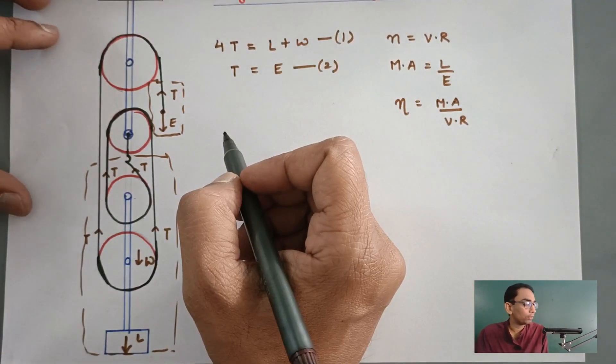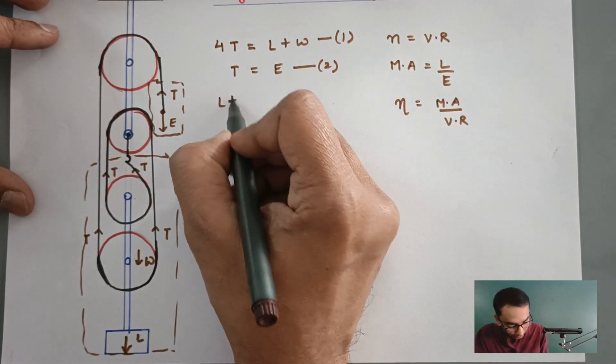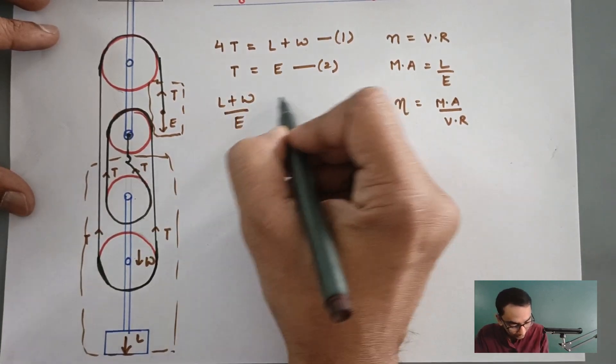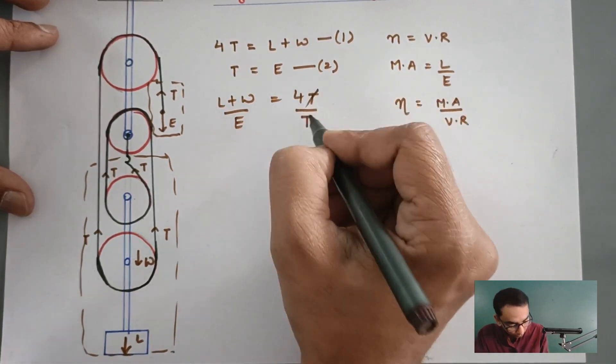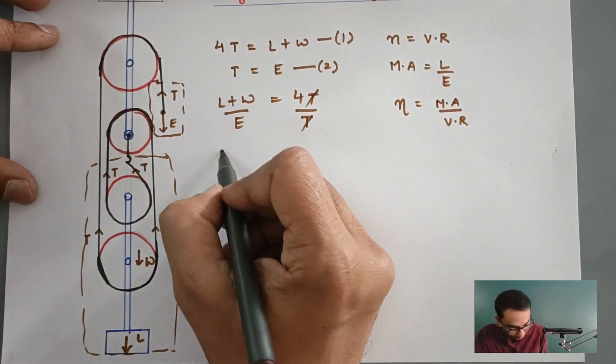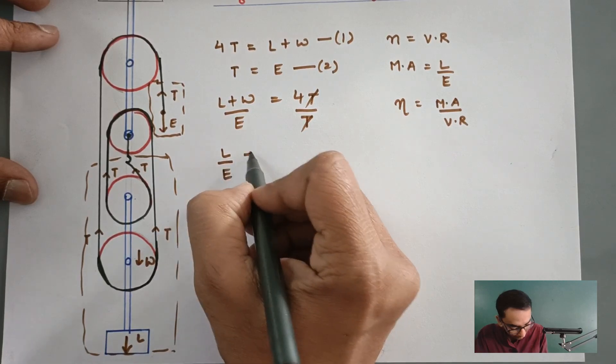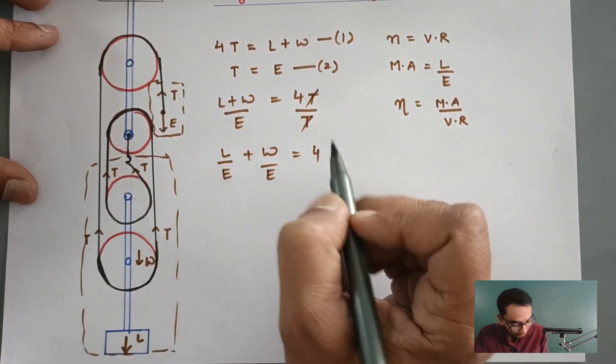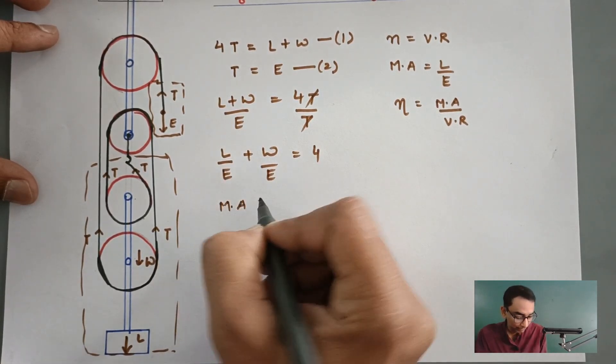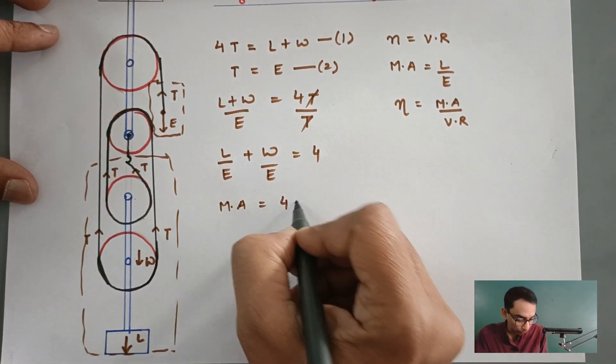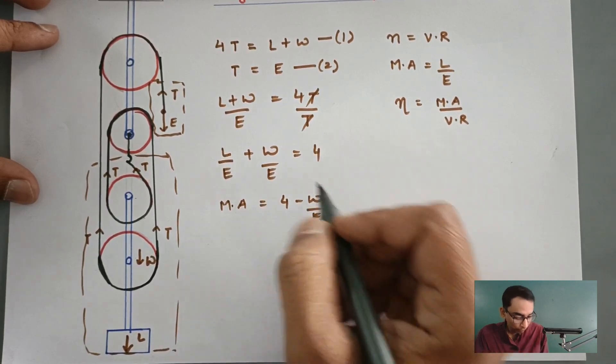Now, I am going to take a ratio of these two. L plus W divided by E, that is equal to 4T upon T, which equals 4, T getting cancelled. Just splitting it up, L divided by E plus W divided by E is equal to 4. We do know the fact that L upon E is the mechanical advantage. So, mechanical advantage is equal to 4 minus W divided by E.